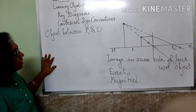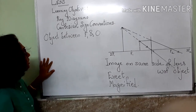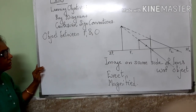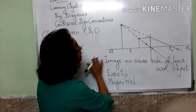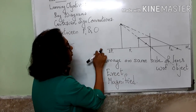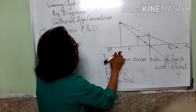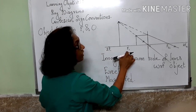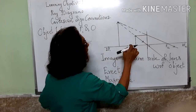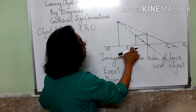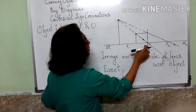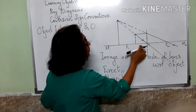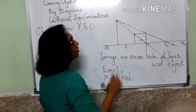Welcome students. The other day we were discussing ray diagrams — the images formed by convex lens when the object is kept at different positions: at infinity, beyond 2F1, at 2F1, between 2F1 and F1, and at F1. Today we will study what is the nature of the image when an object is kept within the focal length of the convex lens.